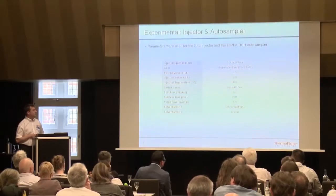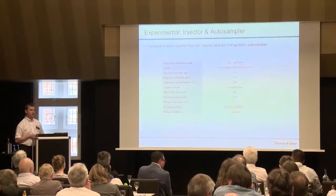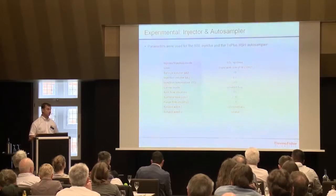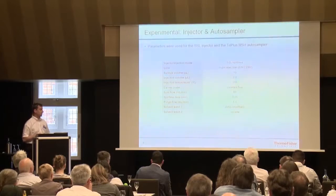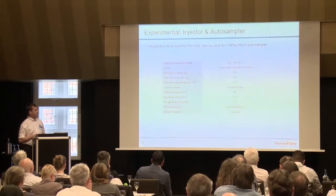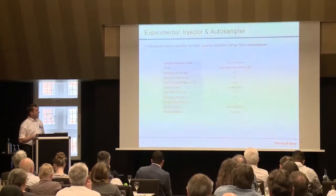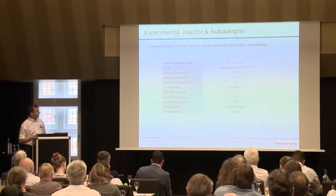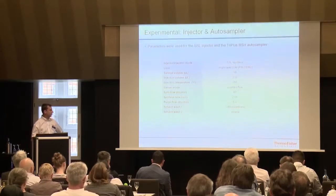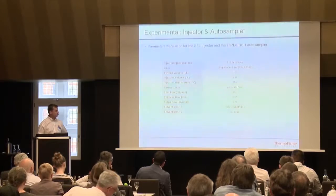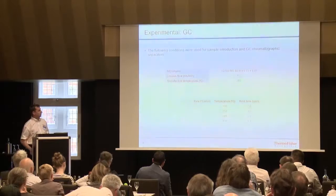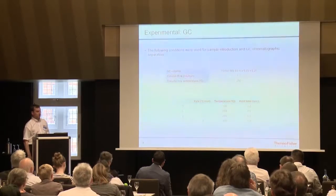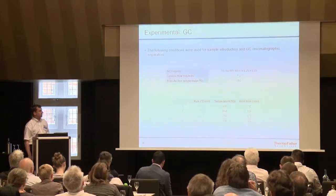For all the samples, we used a split-splitless injector operated in splitless mode, using two microliter injections — so we did not use large-volume injections for any of these experiments — with a single gooseneck liner. The solvent for the sample prep was nonane, washing the needle with dichloromethane and nonane. Typical GC column for dioxins is 60 meter, 0.25mm, 0.25µm with 1.2 flow.